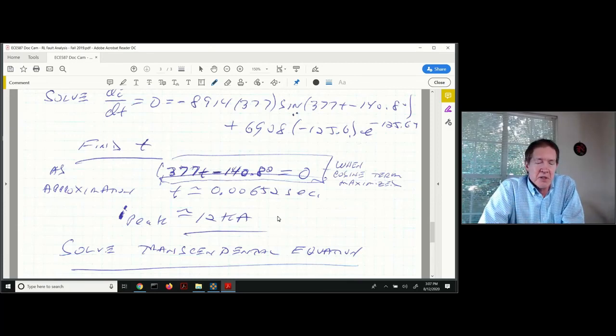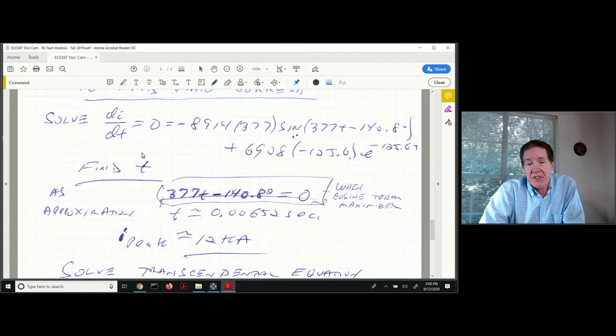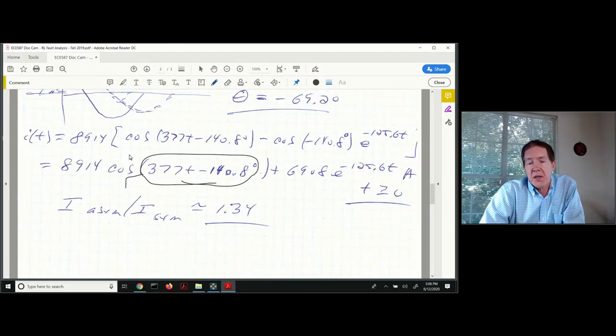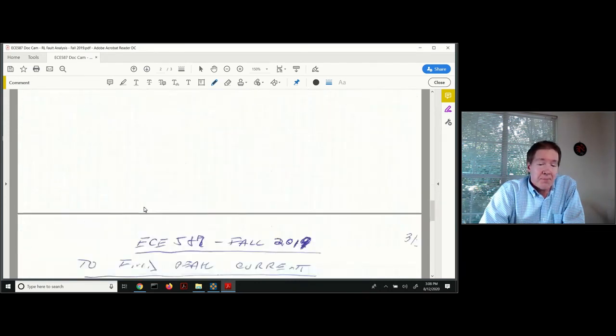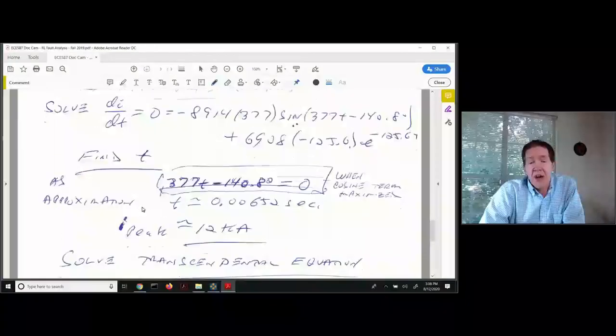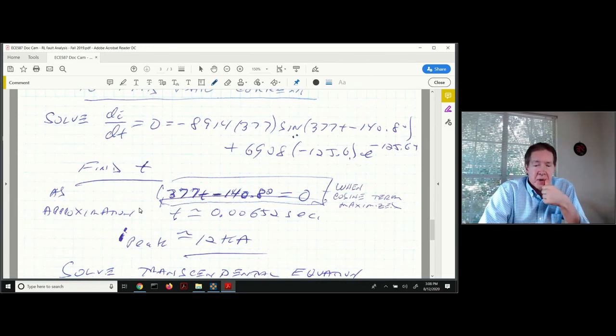There's a number of different ways you could do this. You're not going to have to do something like this a lot in this class. You can plot it out and get it from the plot. You can solve this exact transcendental equation or you can make an approximation looking at the point in time where this first term is at its peak value. Either of those three ways is fine for figuring out the ratio of asymmetrical to symmetrical current.